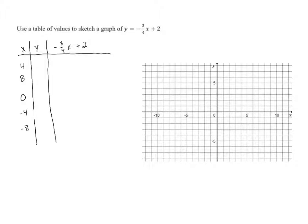Let's plug those in and calculate the values of y. When x is four, we have negative three-fourths times four plus two. Negative three-fourths times four is just negative three. So we have negative three plus two, which is negative one.